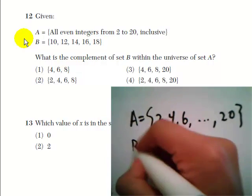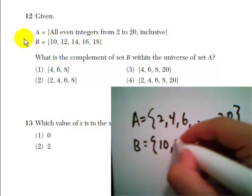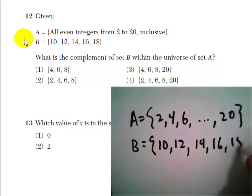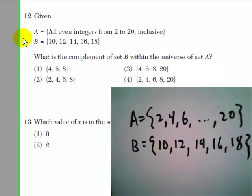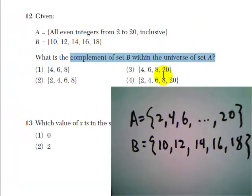And it gives us set B, which has 10, 12, 14, 16, and 18 as its members. And question 12 asks us, what is the complement of set B within the universe of set A?